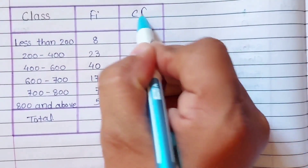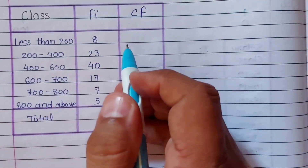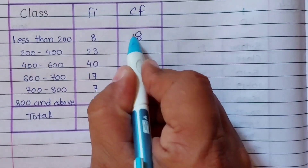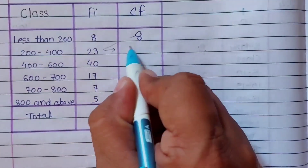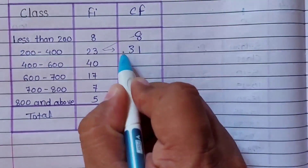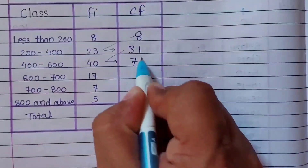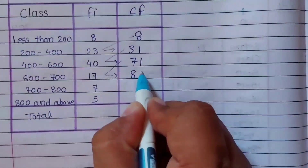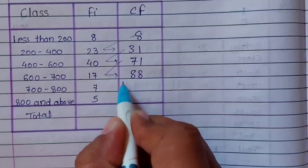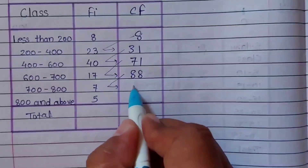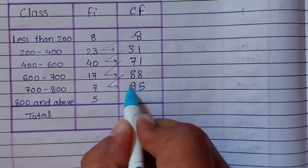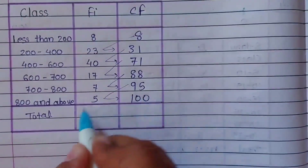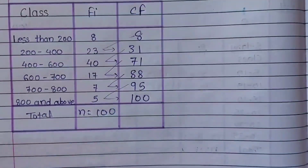First we find the cumulative frequency: 8 as it is, then 8 + 23 = 31, then 31 + 40 = 71, then 71 + 17 = 88, then 88 + 7 = 95, and 95 + 5 = 100. So our n = 100.